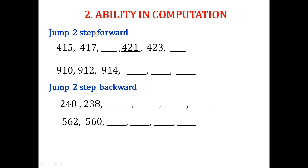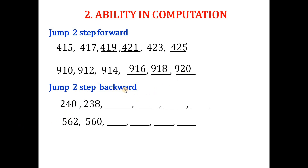Next question: jump two steps forward. Starting from 415, if we count two steps forward we get 417. The next numbers are 419, 421, 423, and 425. Similarly, another sequence goes: 960, 980, 920.